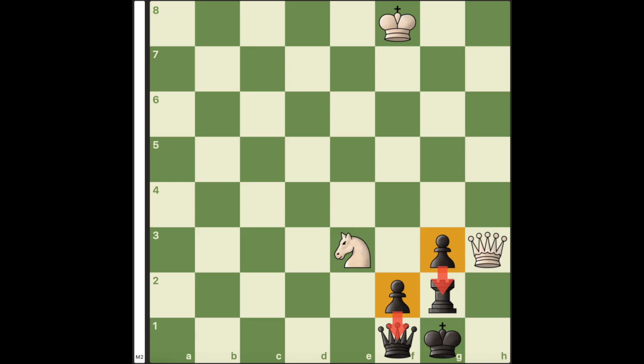First, we need to understand the position. So first things first, the pawns go down the board so they cannot move. Second, the queen is forced to guard g2 squared because White is threatening checkmate there.